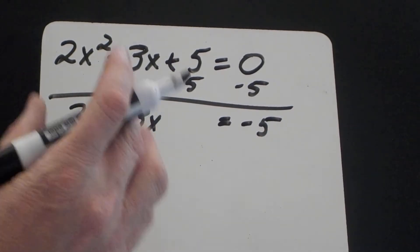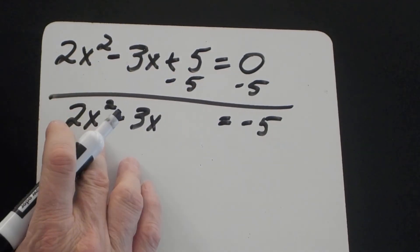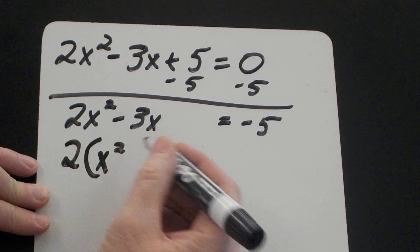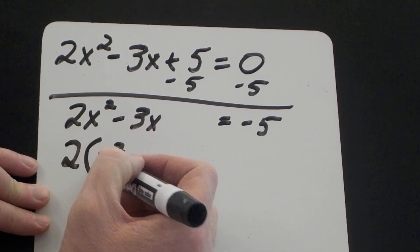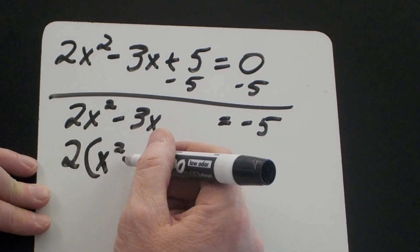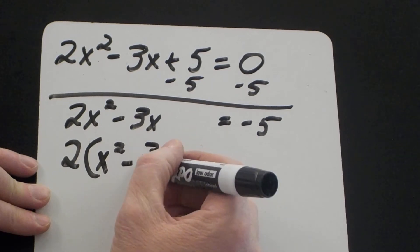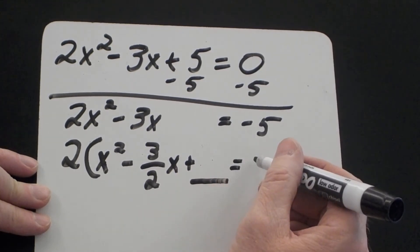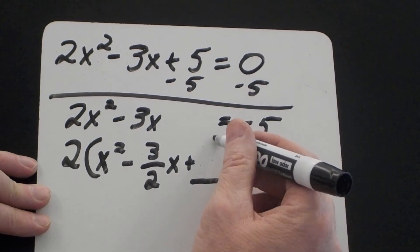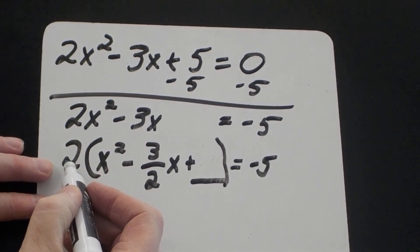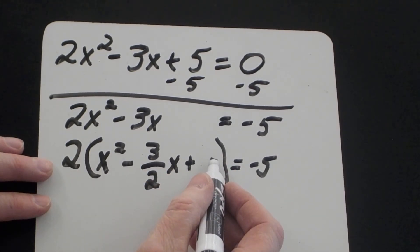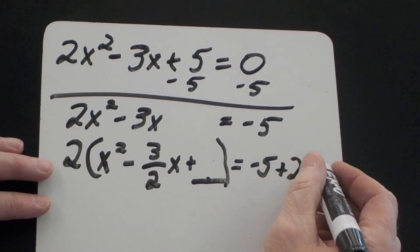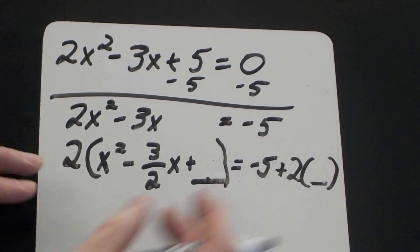The technique for completing the square requires the leading coefficient to be 1 on x squared, so I'm going to divide through by 2. Two x squared divided by 2 is x squared; negative 3x divided by 2 is negative three-halves x. I'll add something to complete the square. Notice there's a 2 on the outside, so when I add that number inside, I'm adding 2 times that number to the other side to keep things balanced.